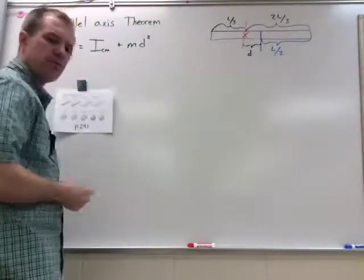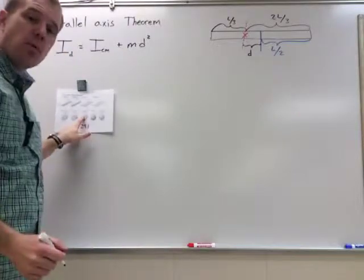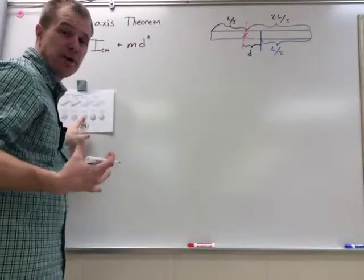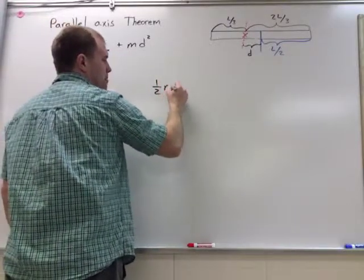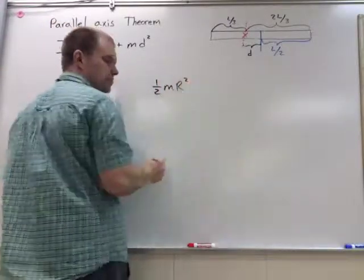First thing we do is we look up what the moment of inertia about the center of mass of my hula hoop is. The moment of inertia of my center of mass is one-half m r squared.